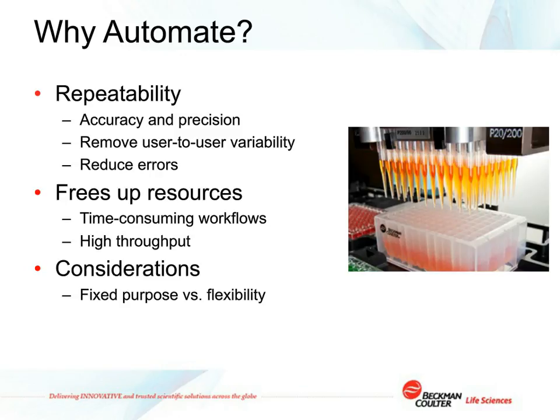Typical reasons why people automate applications usually come down to one or both of two reasons. The first is repeatability — automation can help by improving the accuracy and precision of a given liquid transfer step or protocol. By relying on automation, you can remove the user-to-user variability that's always inherent when multiple people are performing the same application, and by reducing human interactions you can reduce errors in sample prep. In addition, automation can help free up resources. If you have a very time-consuming or complex workflow, that can chain us to the bench, and many of us feel our time is better spent designing experiments or analyzing results rather than performing bench work. Even if you have a simple workflow, if you have a high enough throughput, this can still become time-consuming.